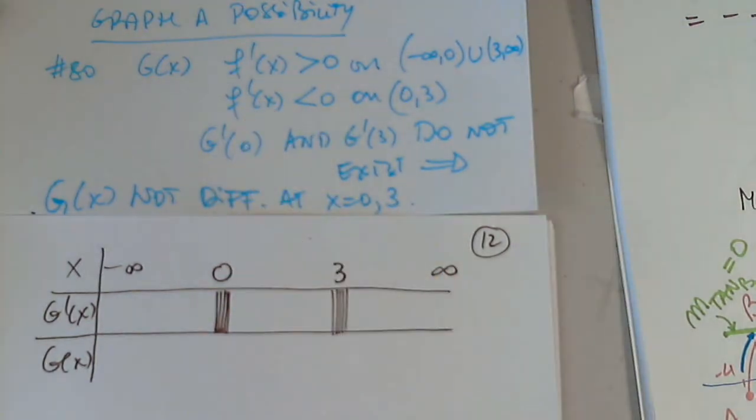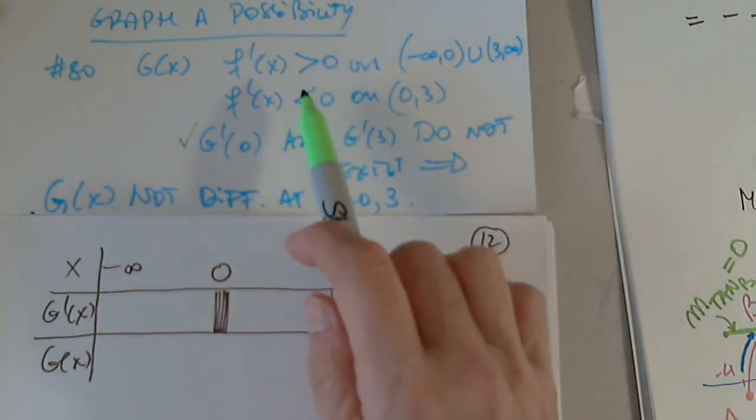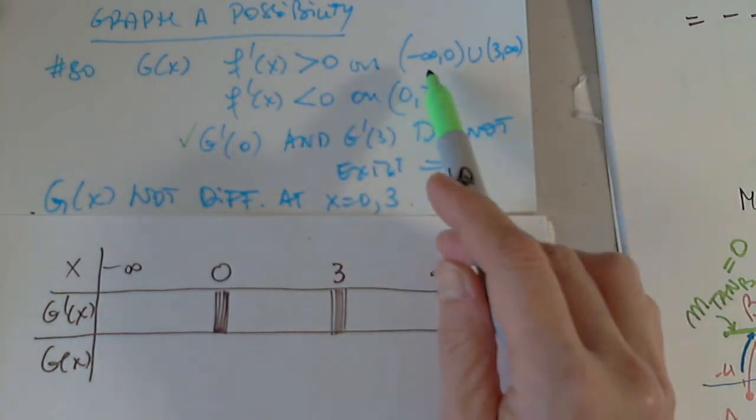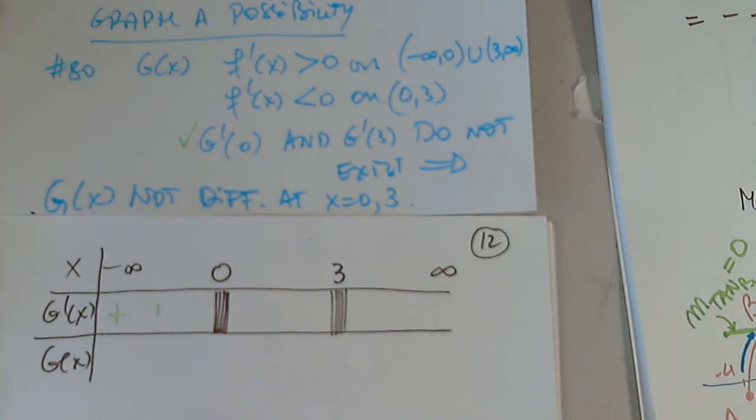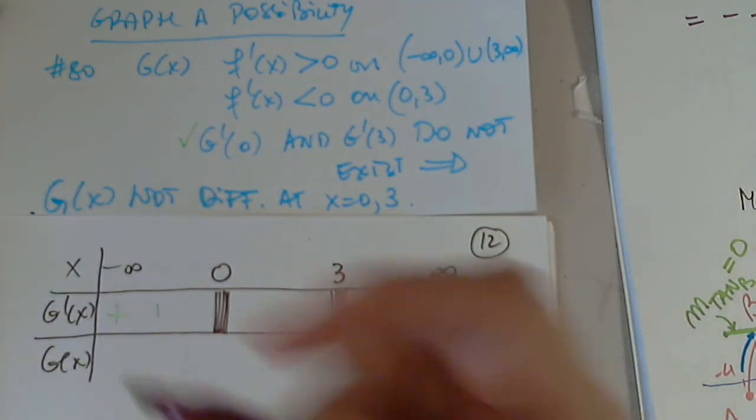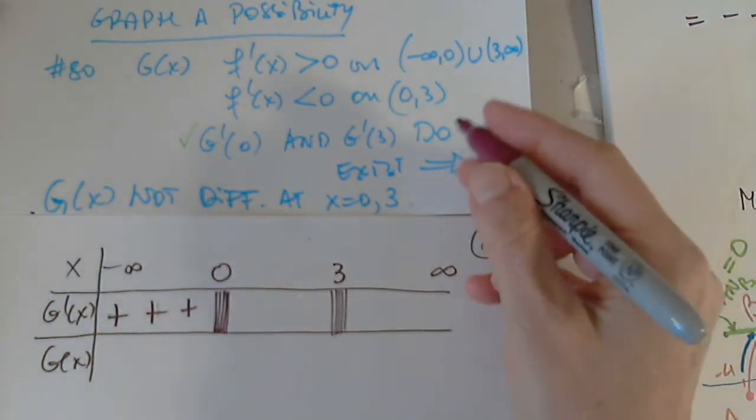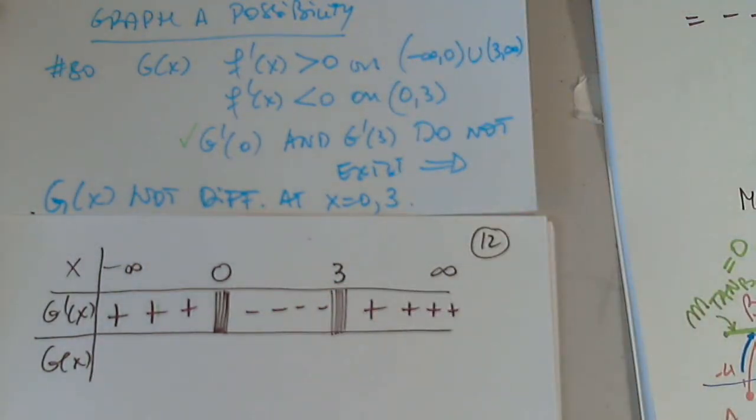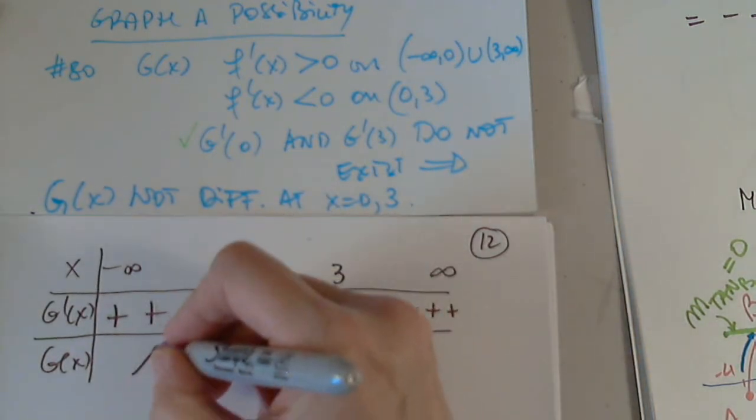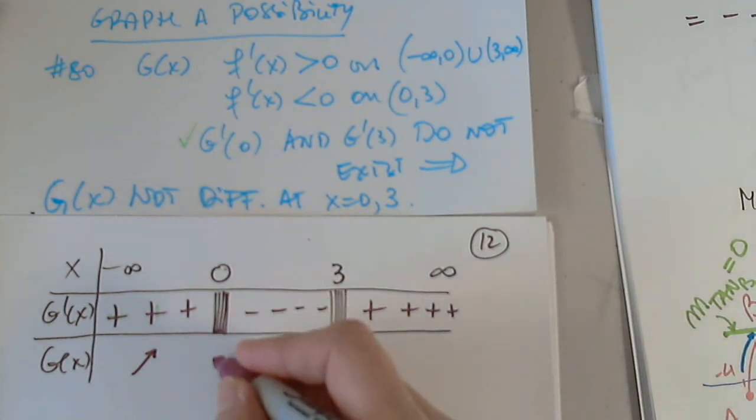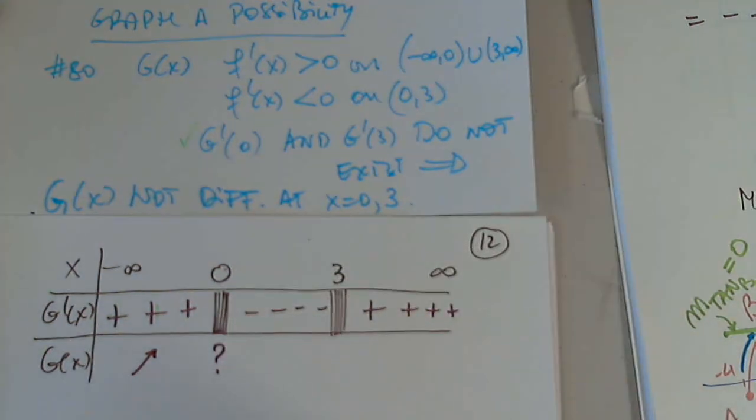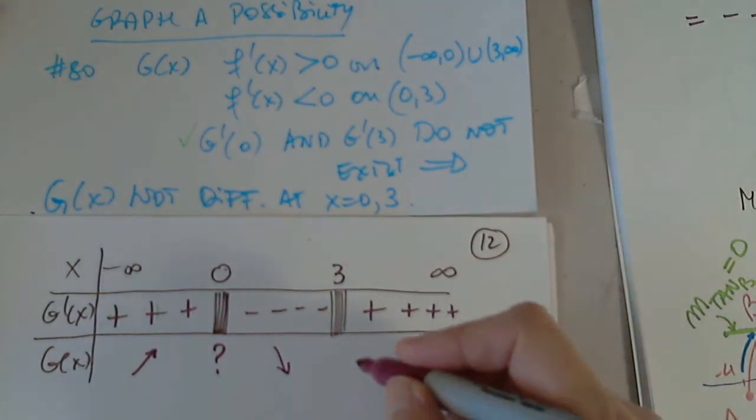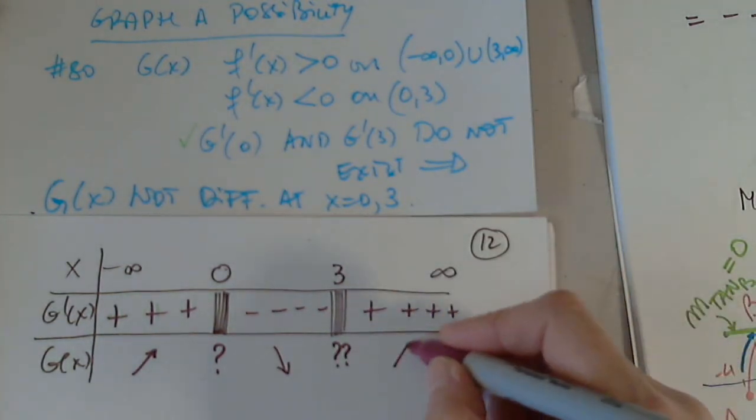But they also say, so this I took care of, but they also say that g' is positive for (-∞,0) and (3,∞). And it's negative between 0 and 3. So, then the function will be increasing. And I can put whatever number I want in here. It doesn't matter. You choose. And it's decreasing to whatever. And then it's increasing.